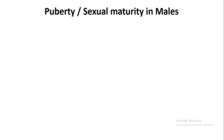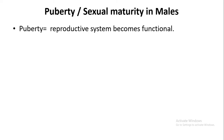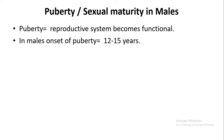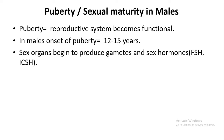Here we will study about puberty which is found in males. In males, the reproductive system becomes functional at about 12 to 15 years old. The hormones play an important role, and the sex organs will produce gametes.